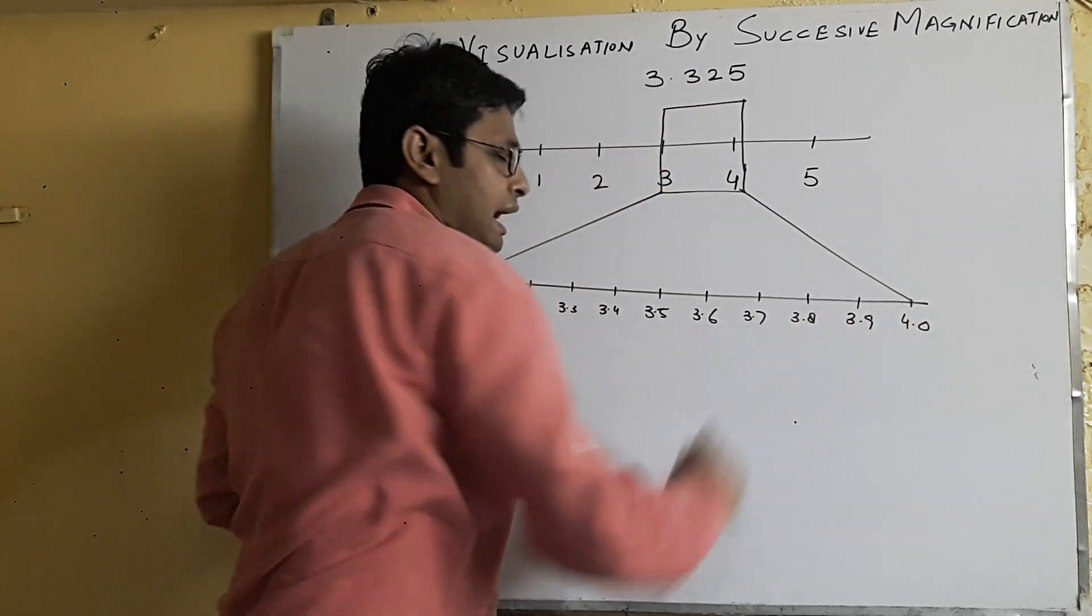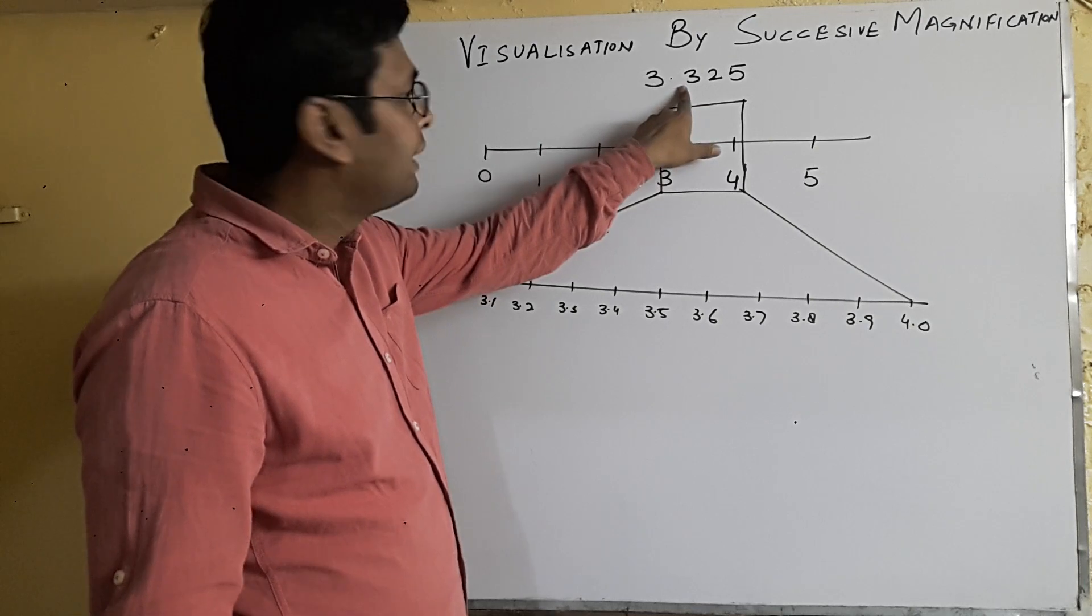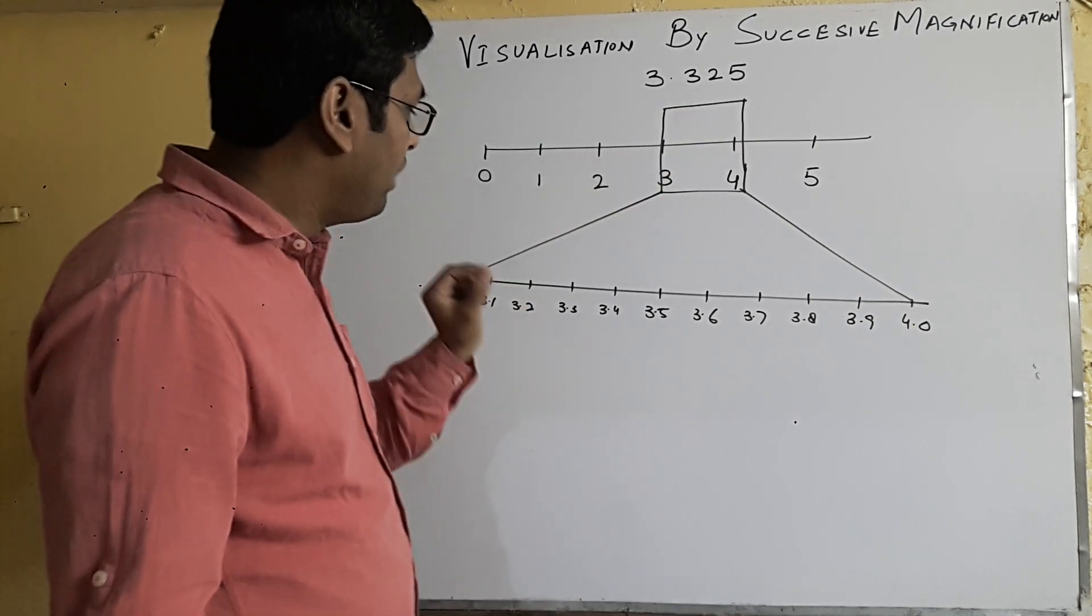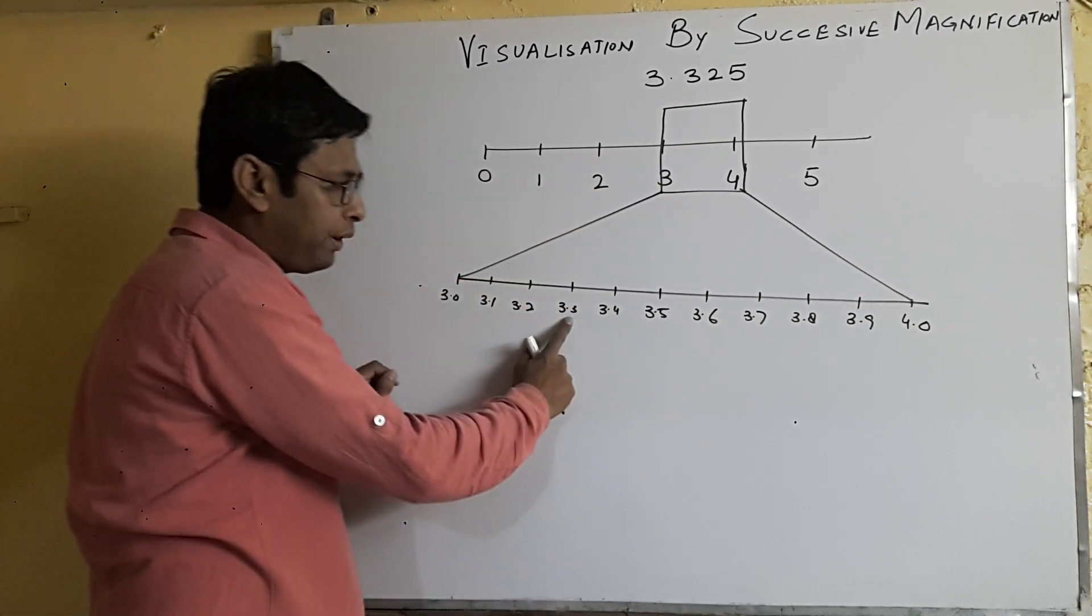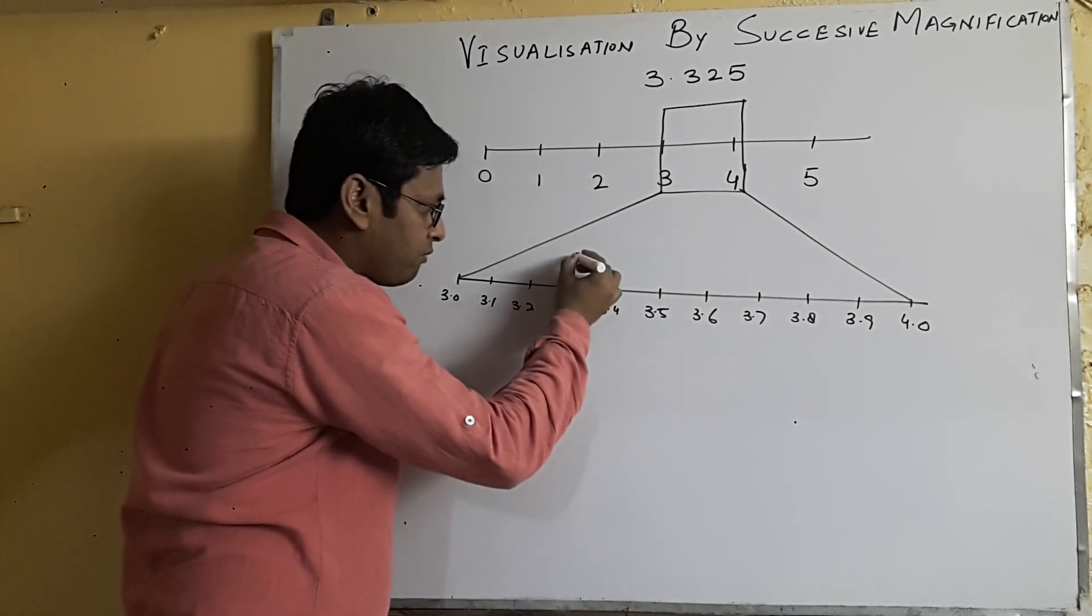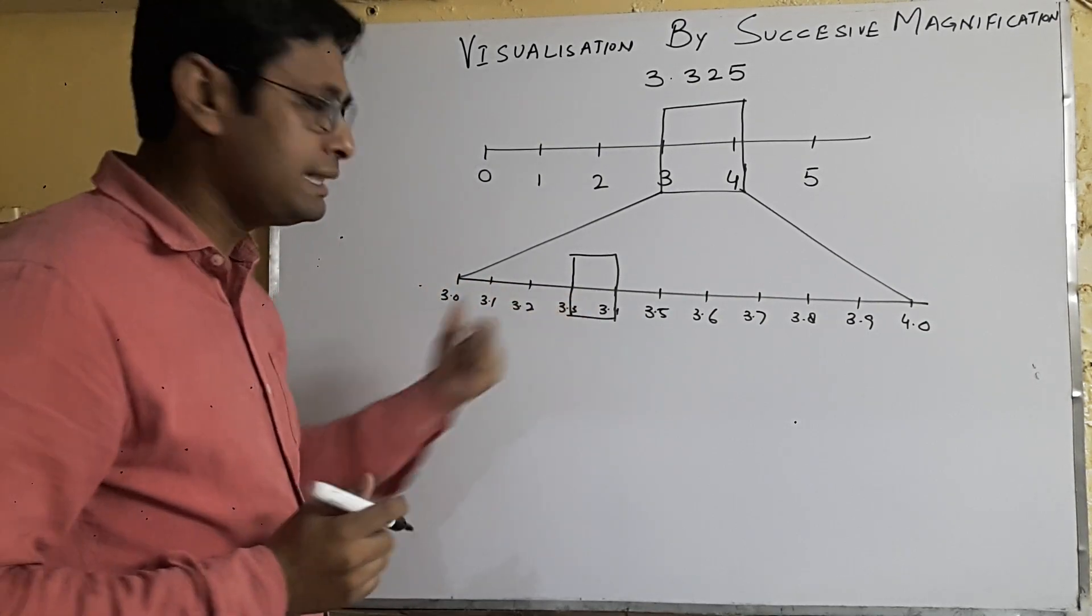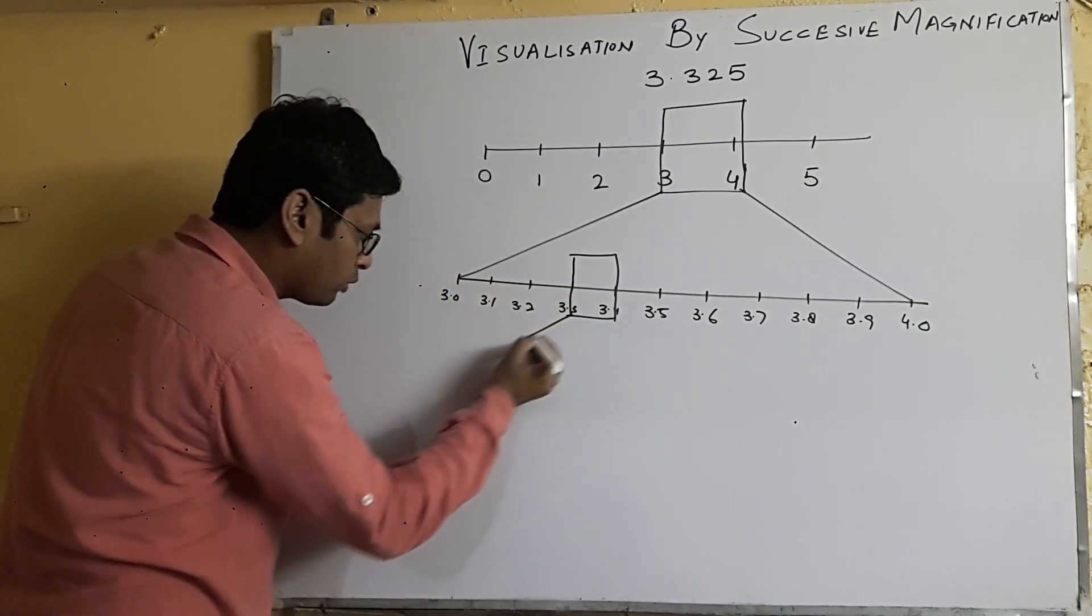So you can see that you have magnified this area and you can easily understand that 3.325 will lie between 3.3 to 3.4. So now I'm going to magnify this area. Now I will magnify this area, so one more time I'm going to do zoom.